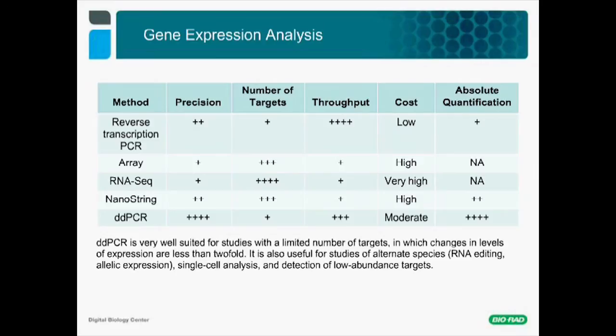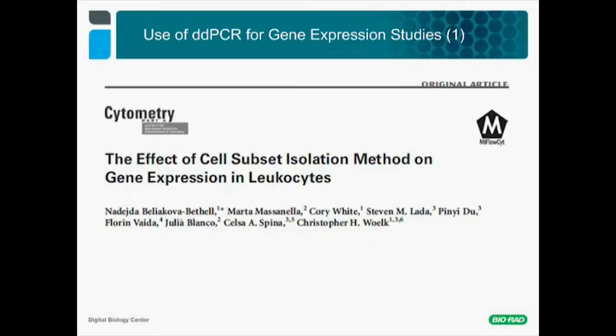I will now discuss a few results published in the literature. In this publication by Dr. Beliakova and collaborators, the scientists explored the effects of cell isolation on gene expression. Multiple scientific disciplines require isolation of specific subsets of blood cells from patient samples for gene expression analysis by microarray, RNA sequencing, or other methods. One essential concern during these isolation tests is the prevention of disease- or treatment-related signature loss. Very little was known about the impact of different cell isolation methods—positive selection, negative selection, and fluorescence-activated cell sorting, or FACS—on gene expression, and these had not been assessed in parallel.